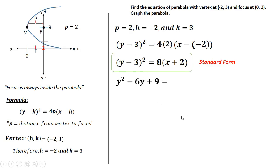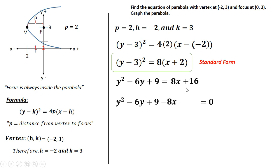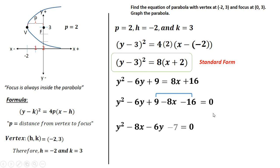On the right side, apply the distributive property: 8 times x is 8x, and 8 times 2 is 16. Then set the whole equation equal to zero by transposing all terms from the right to the left: negative 8x, negative 16, then combine like terms — 9 minus 16 is negative 7. Arranging gives the general form: y² - 8x - 6y - 7 = 0.